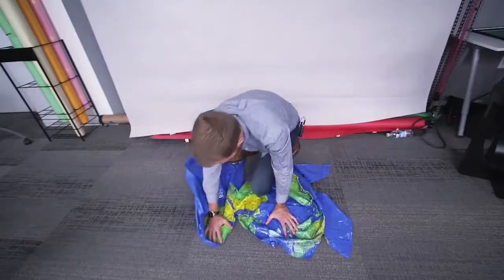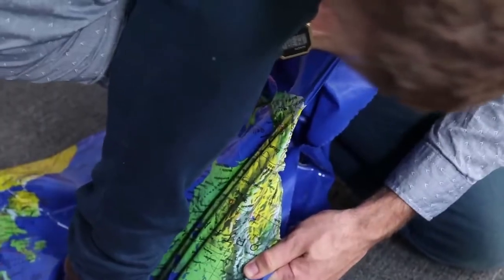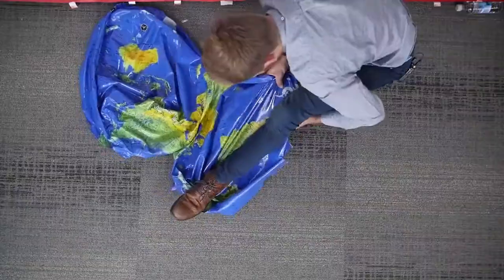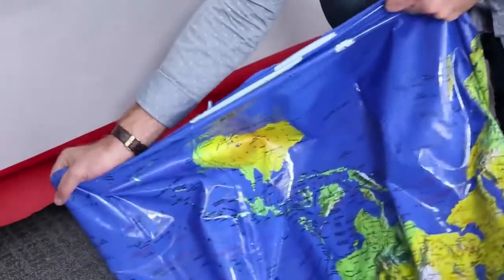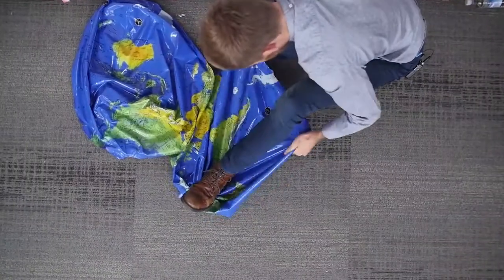In order to get this globe to look anything close to a rectangle lying flat, I've had to cut it in several places. I've had to stretch it so that the countries are starting to look all wonky, and even still it's almost impossible to get it to lay flat. And that right there is the eternal dilemma of map makers.